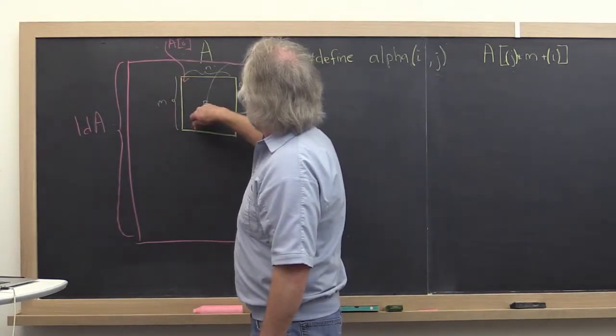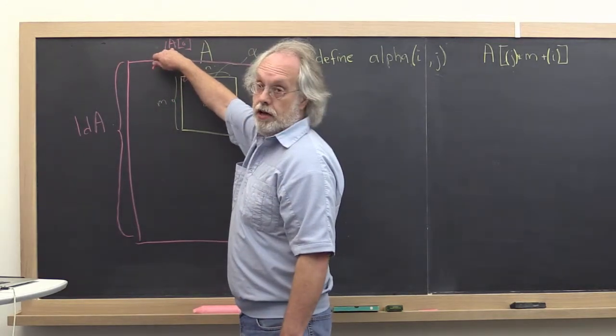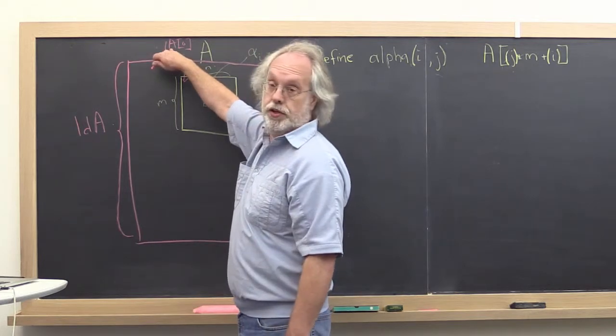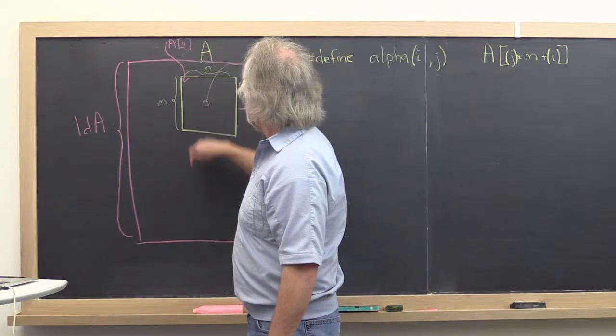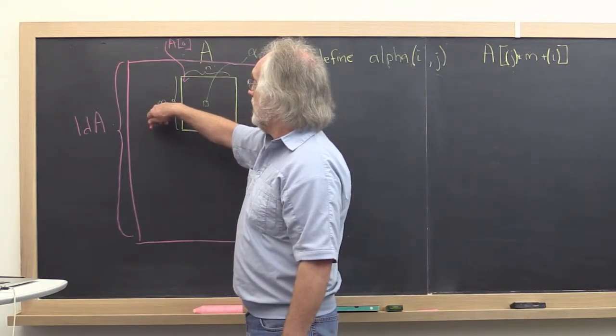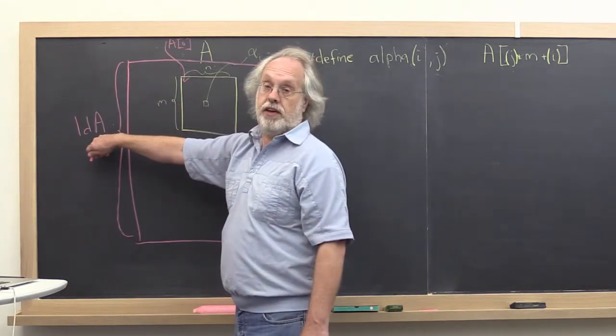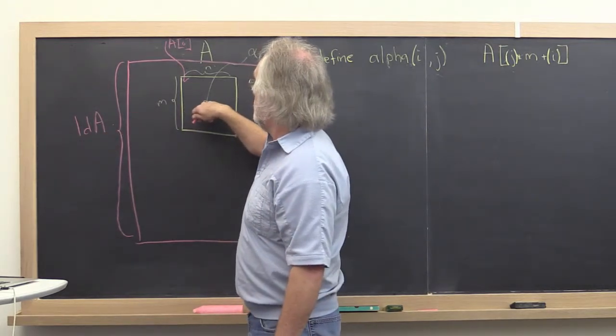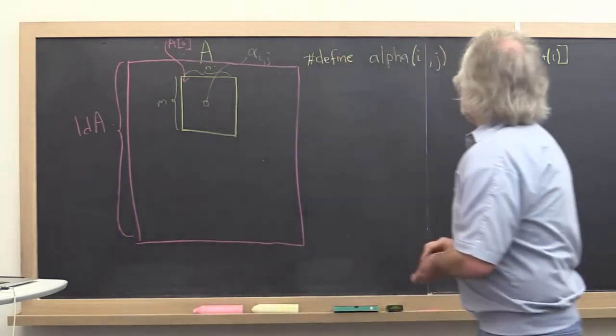This location is still relative to address A. But now to get from one entry in the row to the next entry in the row, instead of going through M entries in memory, you go through the leading dimension of A entries. Think of this as the stride you need to take to stay within a row.